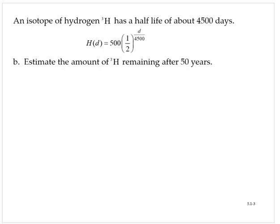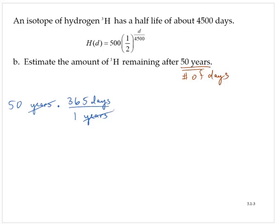Estimate the amount of H3 remaining after 50 years. Our model has D as the number of days, so the first thing we need to do is convert 50 years to a number of days. Recall that there are 365 days in one year, so using that unit conversion, 50 times 365 gives us 18,250 days.